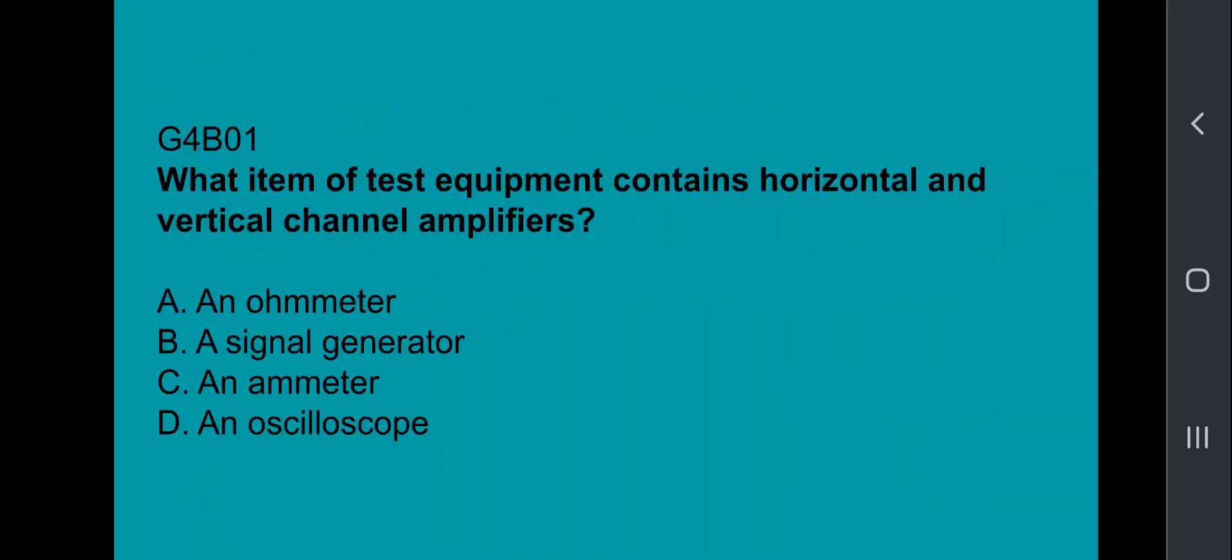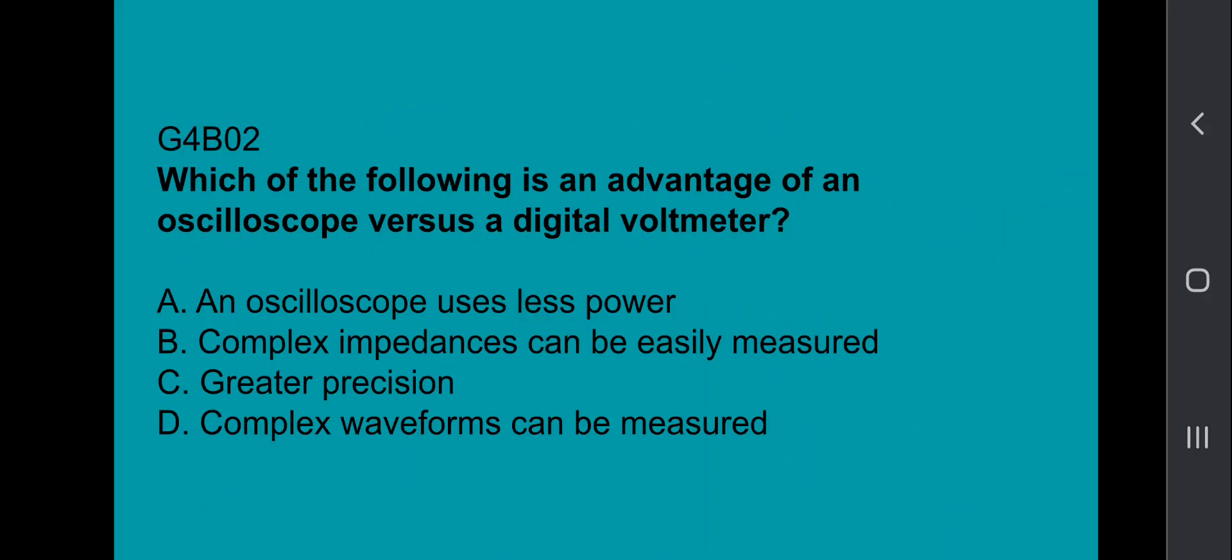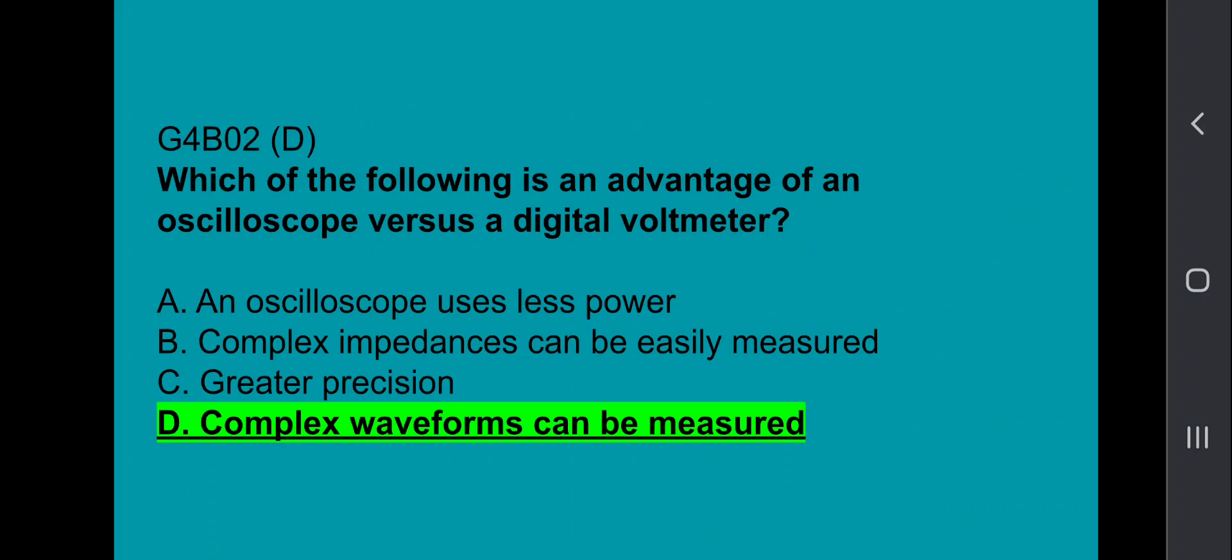First up, G4B01, what item of test equipment contains horizontal and vertical channel amplifiers? An oscilloscope. G4B02, which of the following is an advantage of an oscilloscope versus a digital voltmeter? Complex waveforms can be measured.